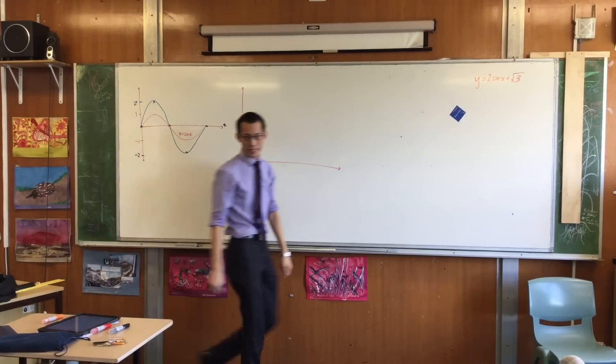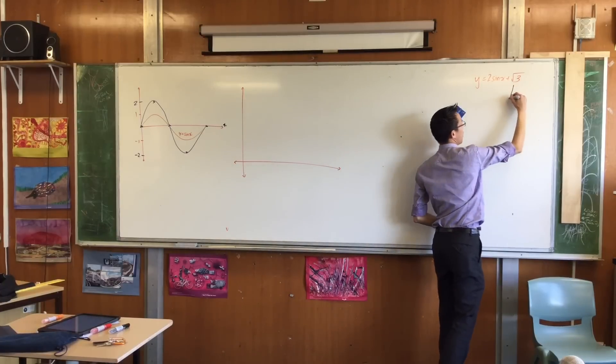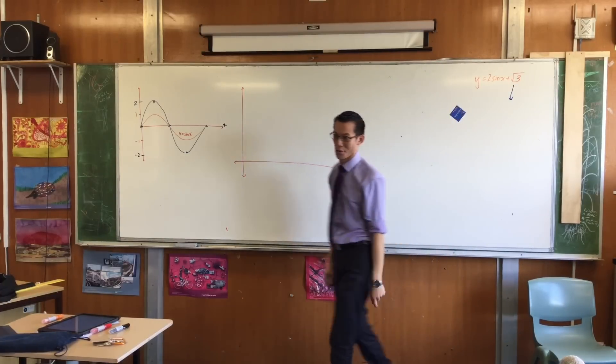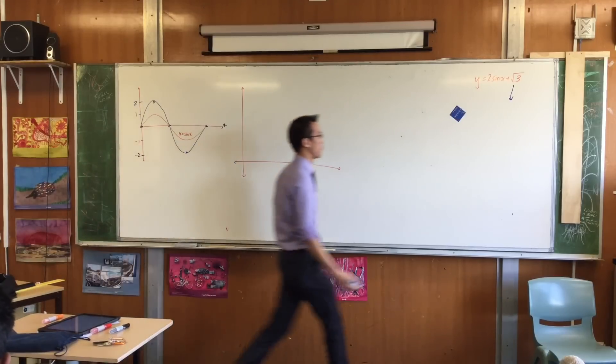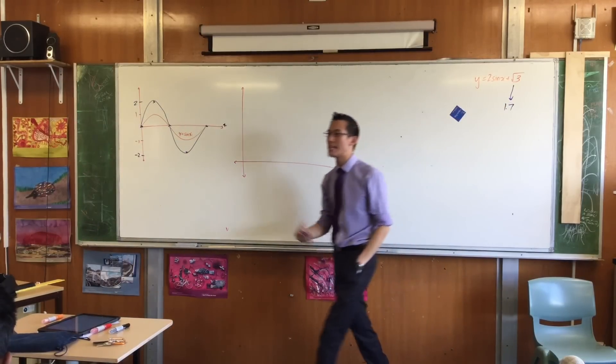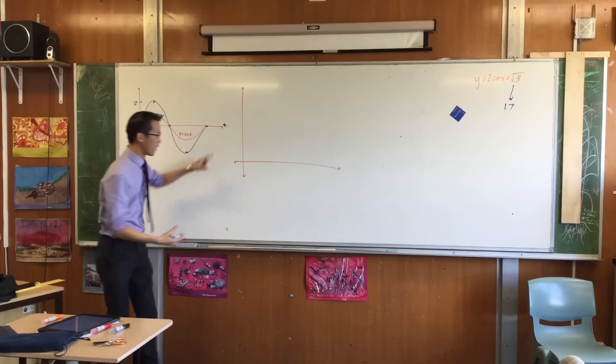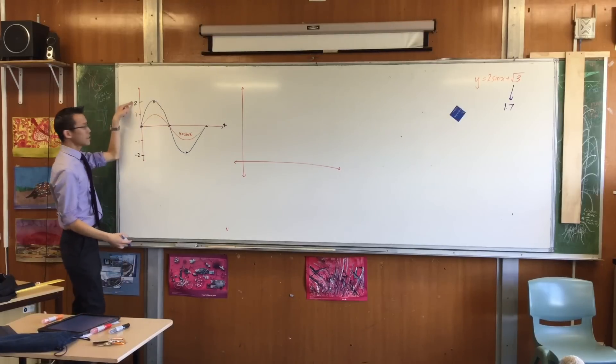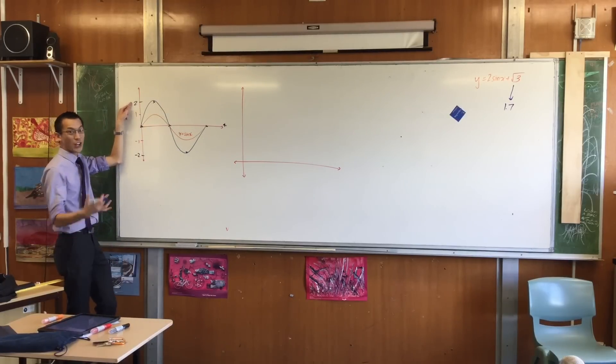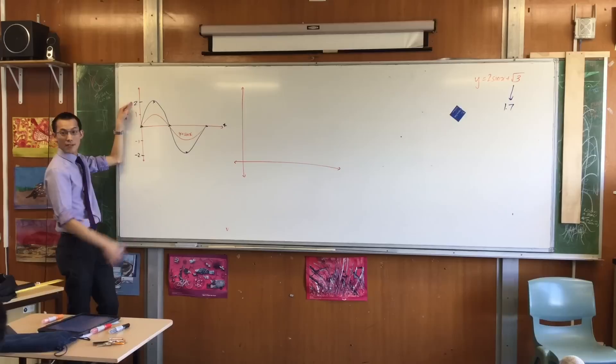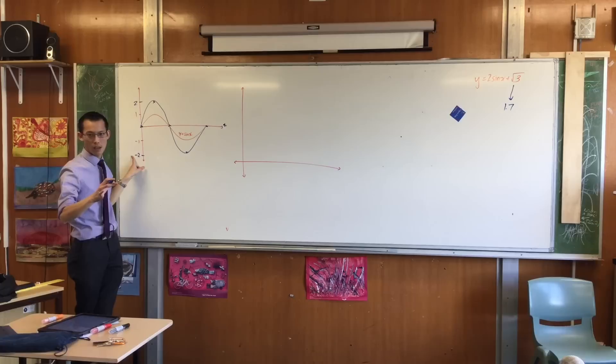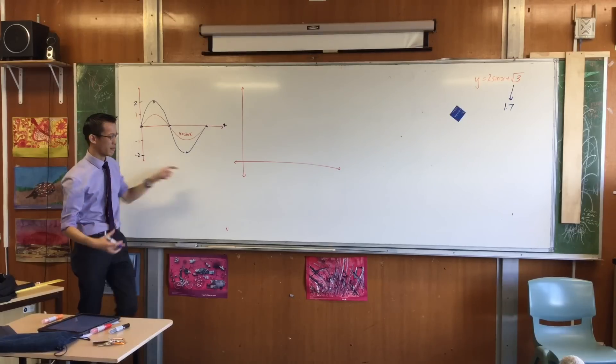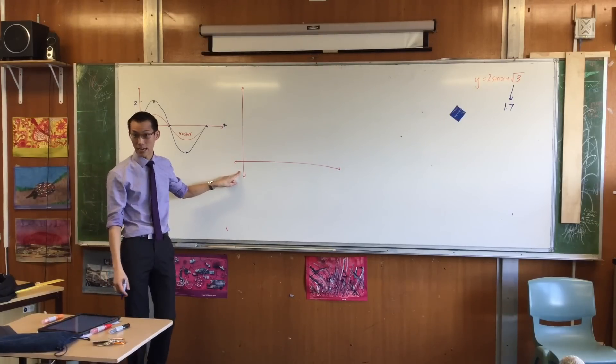Now, you're never really going to get assessed officially on knowing any of the decimal places of root 3. But I think it's helpful to know that it's roughly 1.7. Because what that means is now I've got a rough idea of how far this is going to go. This, that used to be 2, is going to be about 3.7. And this, which used to be negative 2, is going to be about negative 0.3, which is why I've got a teeny little bit of it down here.